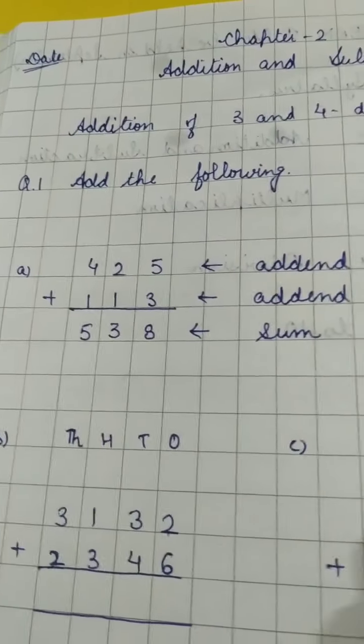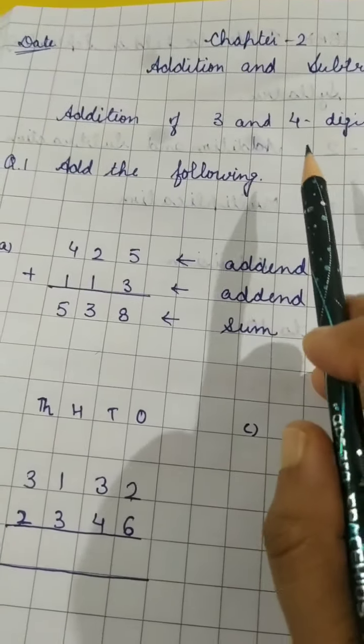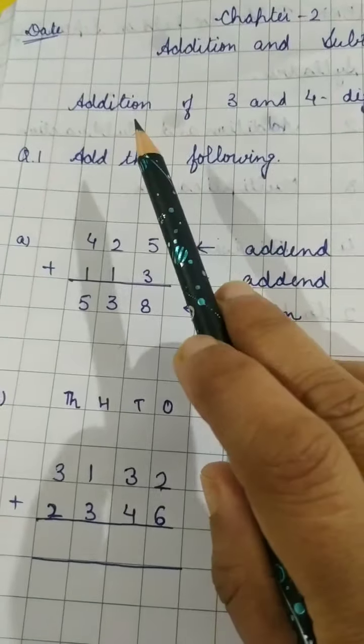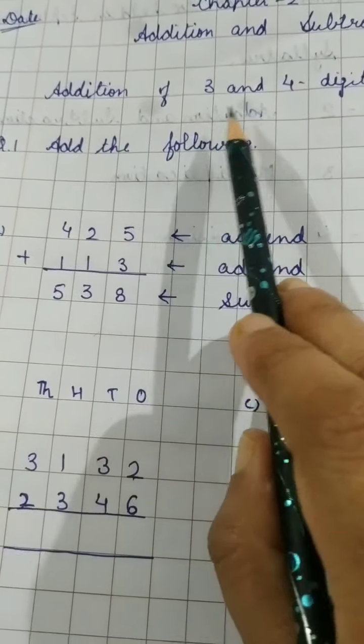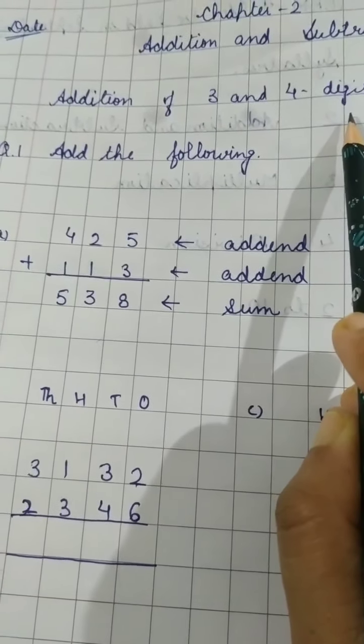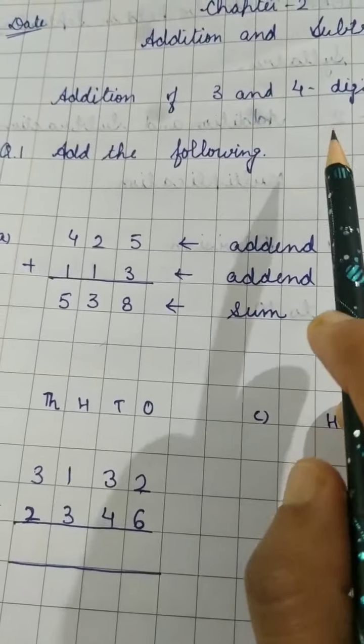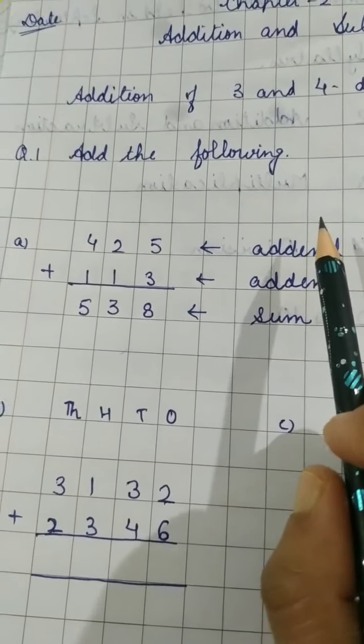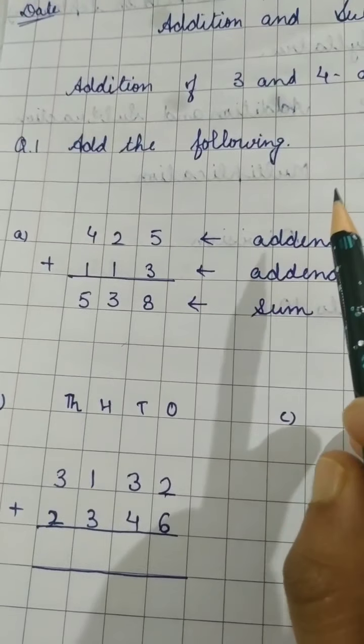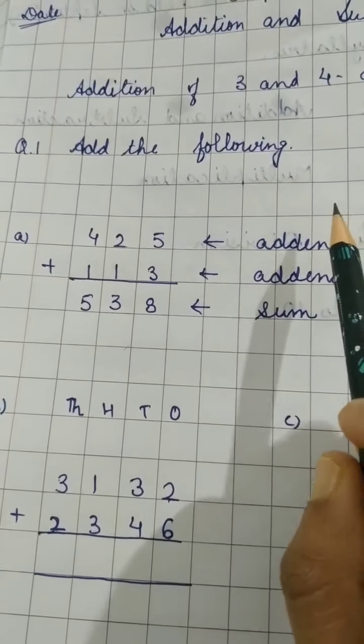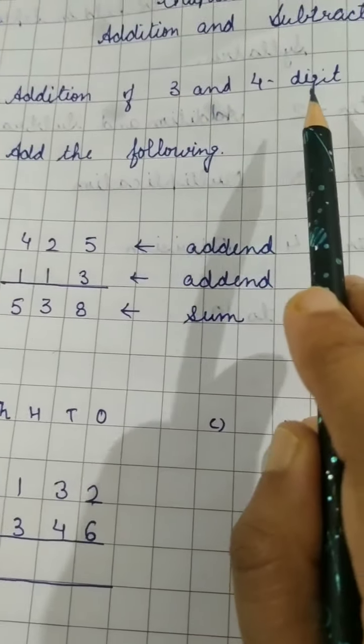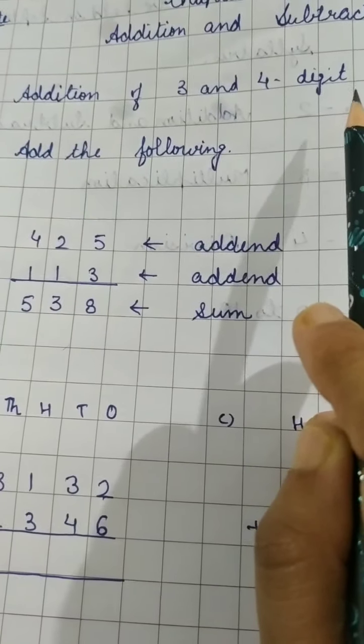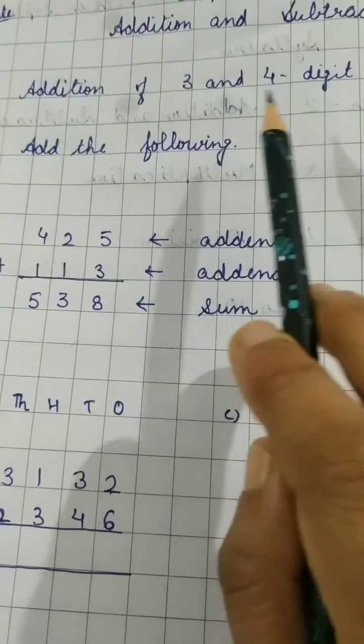We are going to start with chapter 2 addition and subtraction. See children, in your syllabus you are having addition of 3 and 4 digits only. So please follow the questions which are given by me. Please follow the videos. If you want to practice from the book you can, but we have only 3 and 4 digit numbers in our syllabus.